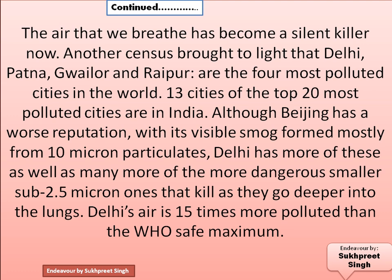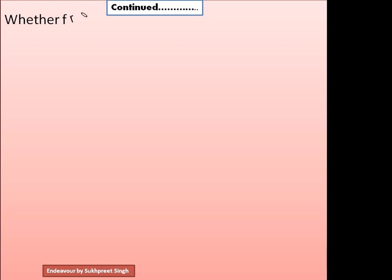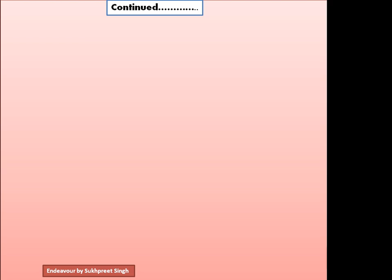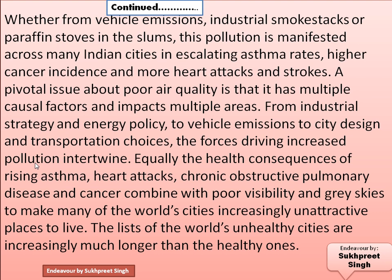You don't need to memorize all these facts, but mentioning two or three makes your article more presentable and full of content. Moving further, the article discusses causes of pollution: 'Whether from vehicle emissions, industrial smoke stacks, or paraffin stoves in the slums, this pollution is manifested across many Indian cities in escalating asthma rates, higher cancer incidence, and more heart attacks and strokes. A pivotal issue about poor air quality is that it has multiple causal factors impacting industrial strategy, energy policy, vehicle emissions, and city design.'